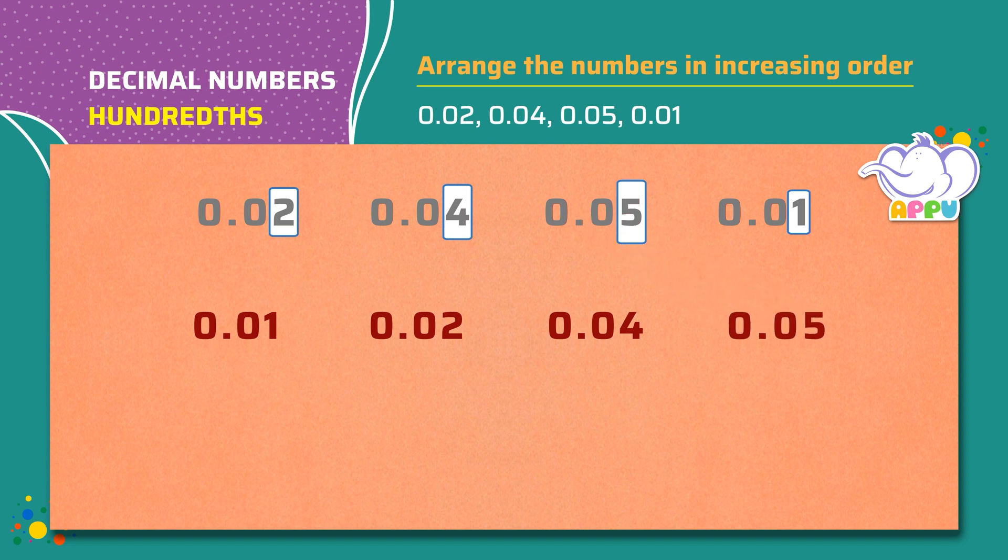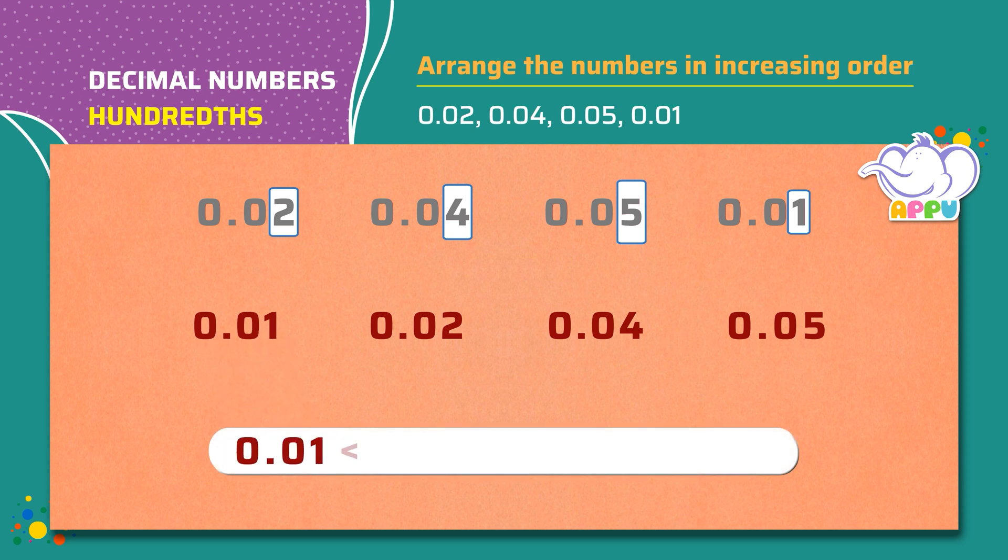So the answer in ascending order is 0.01 is less than 0.02 is less than 0.04 is less than 0.05.